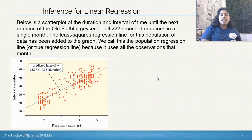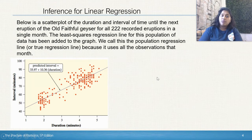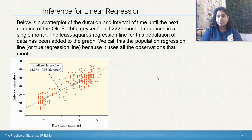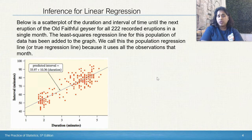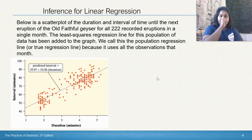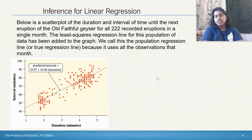Below is a scatter plot of the duration and interval of time until the next eruption of the Old Faithful Geyser for all 222 recorded eruptions in a single month. The least squares regression line for this population of data has been added to the graph.